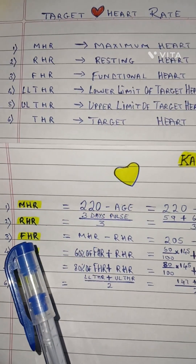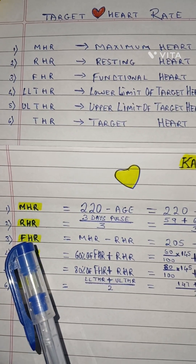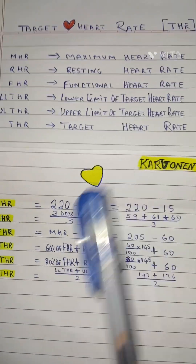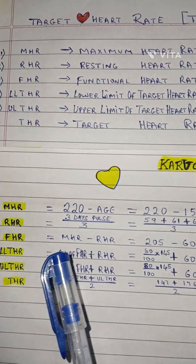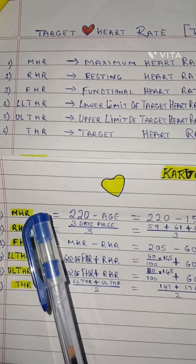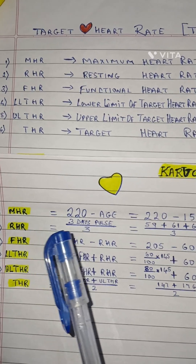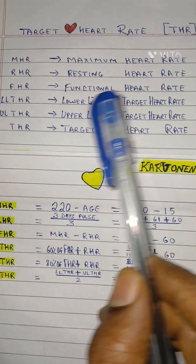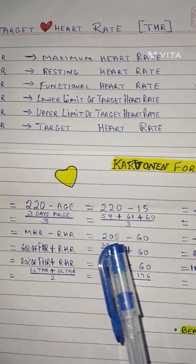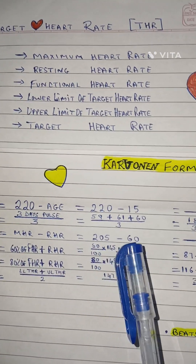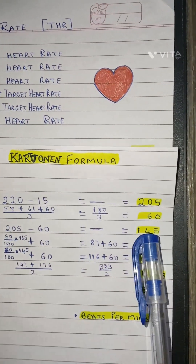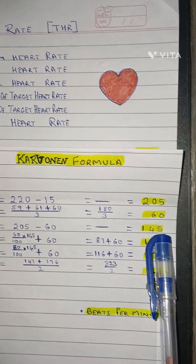Third step: FHR - Functional Heart Rate. The formula is MHR minus RHR, that is Maximum Heart Rate minus Resting Heart Rate: 205 minus 60, which gives us 145.